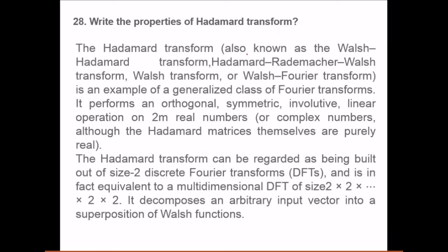Write the properties of Hadamard transform. The Hadamard transform also known as Walsh Hadamard transform or Hadamard Radmischer or Walsh transform or Walsh Fourier transform. These are so many names of Hadamard transform. It is an example of a generalized class of Fourier transform. It performs an orthogonal symmetric involute linear operation on 2 to the M real numbers. Although the Hadamard matrices themselves are purely real, the Hadamard transform can be regarded as being built out of size 2 DFTs and is in fact equivalent to the multidimensional DFT of size 2x2, 2x2, 2x2. So actually it is a multidimensional DFT of some specific size.